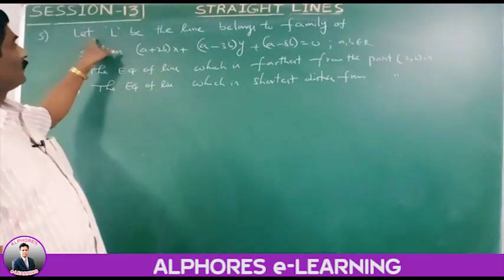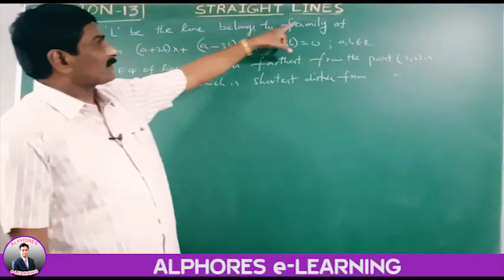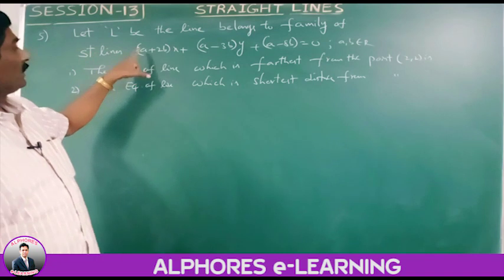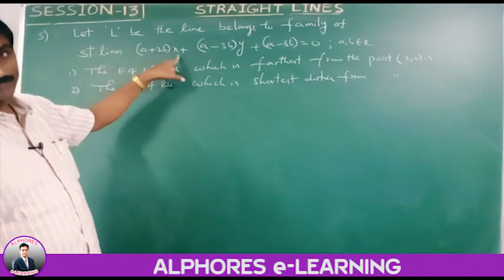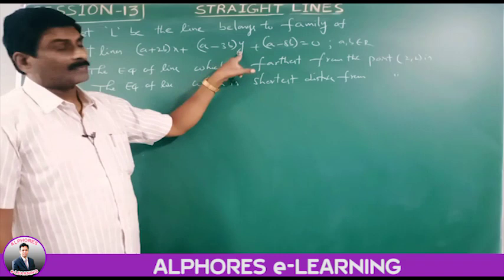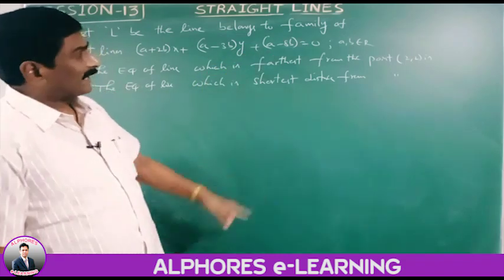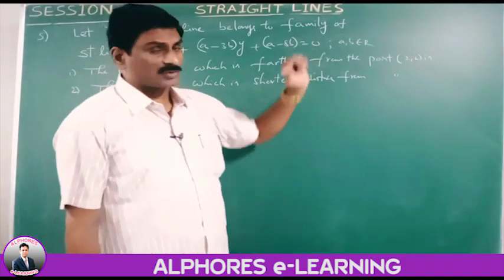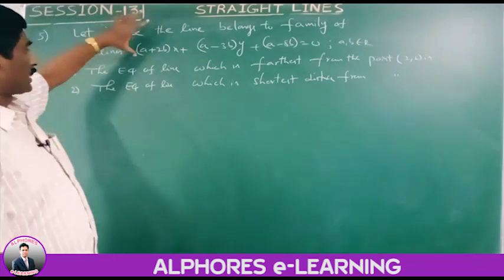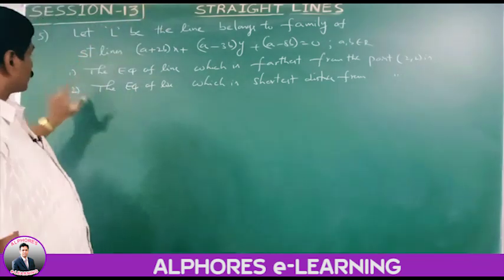Fifth problem (passage): let L be a line belonging to the family of straight lines (a plus 2b)x plus (a minus 3b)y plus (a minus 8b) equals 0, where a, b belong to the reals. Using this condition, solve two sub-problems.